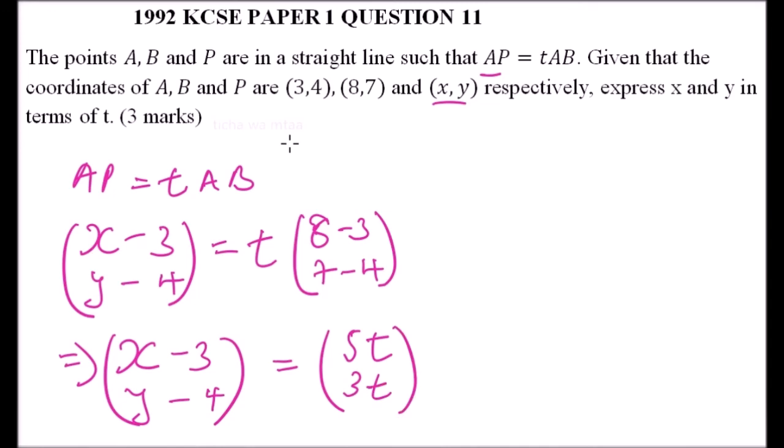Since they are equal, we say that x minus 3 is equal to 5t. Taking 3 to the other side, we have x equals 5t plus 3.